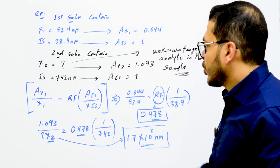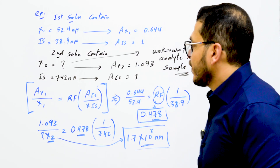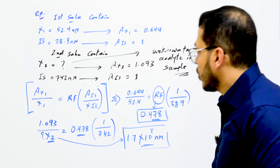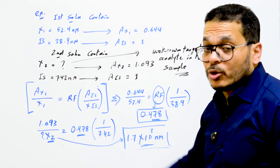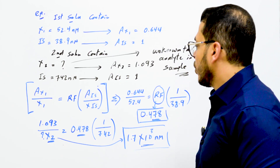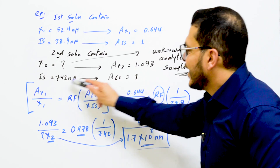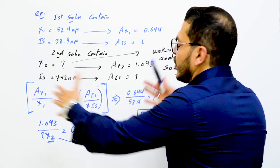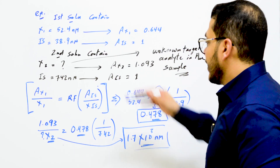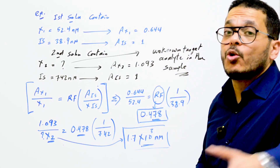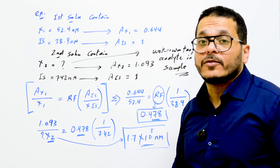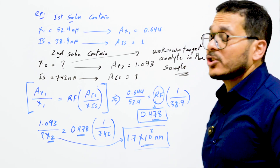First, we use this equation: the area of the analyte for the first solution divided by the concentration of the first solution equals the response factor multiplied by the area of the internal standard divided by the concentration of the internal standard. This is your calibration step — you calculate the response factor or slope that will then be used to quantify all your samples. We get a response factor equal to 0.478.